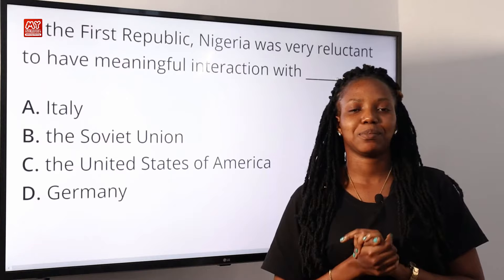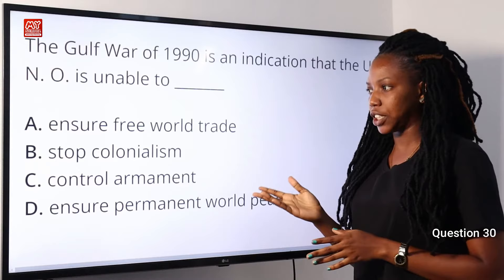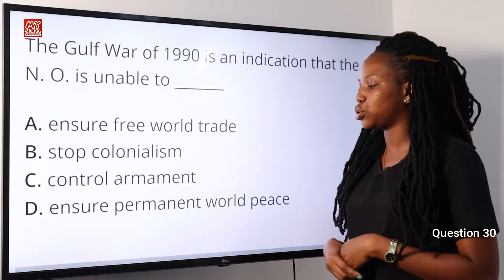Question 30. The Gulf War of 1990 is an indication that the UNO is unable to dash. A, ensure free world trade. B, stop colonialism. C, control armament. D, ensure permanent world peace.